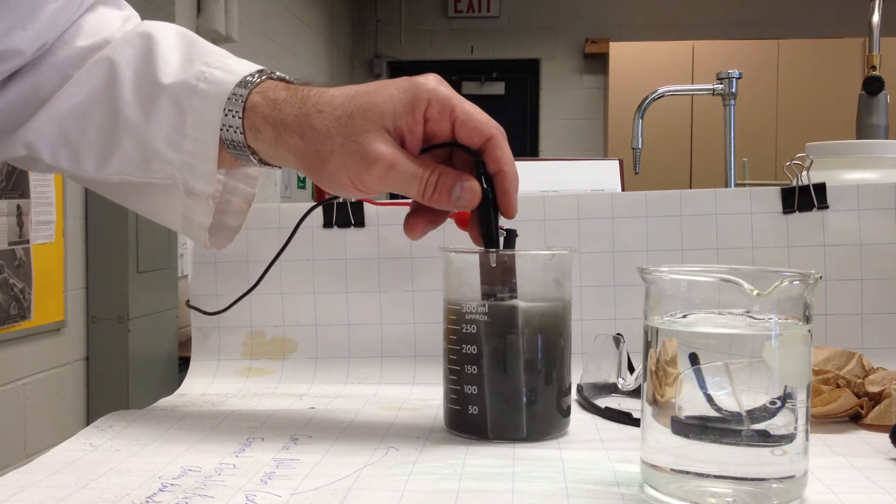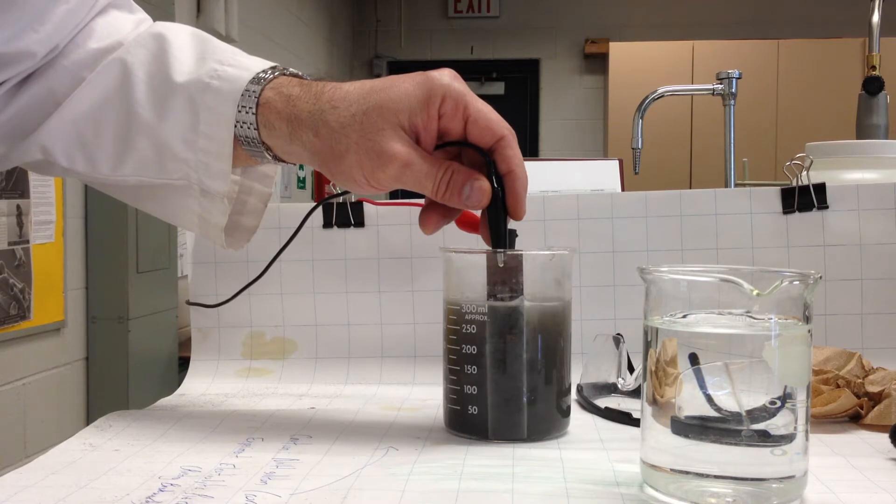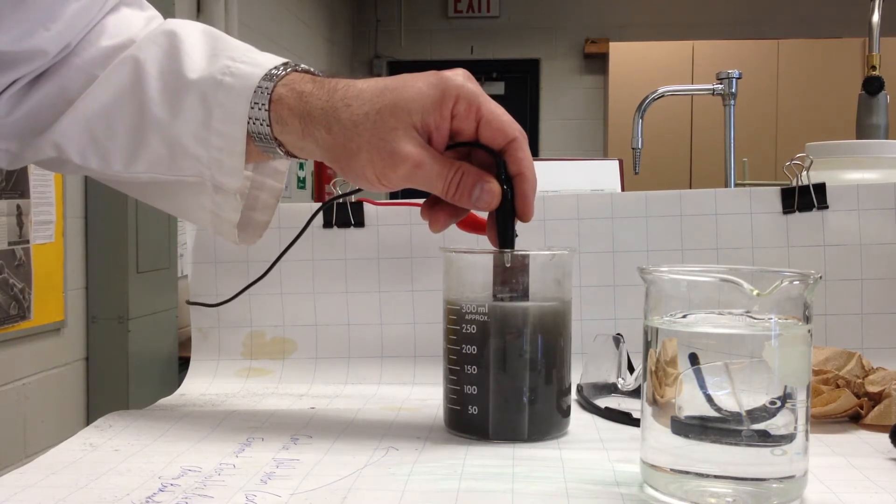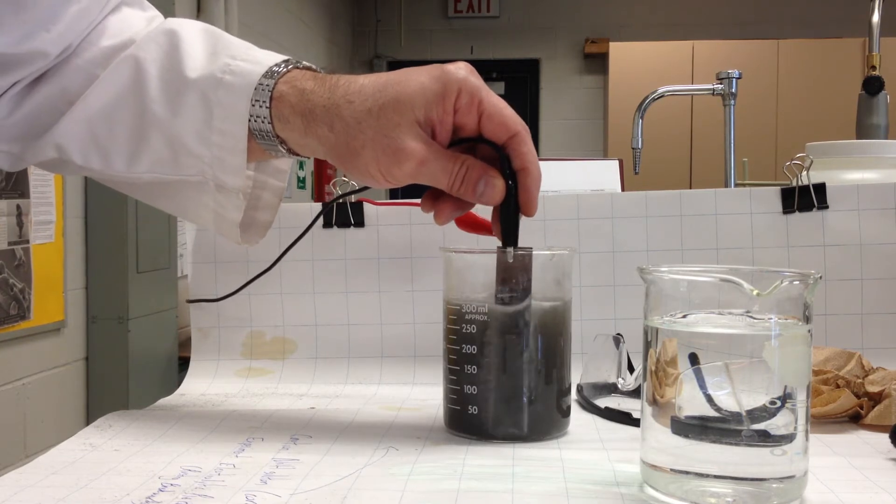And what's happening is the iron atoms are being reduced back to metallic iron, and the oxygen atoms are probably being ripped off the oxide of the iron by the high voltage.